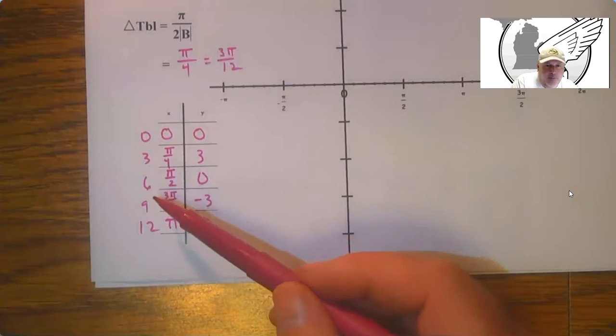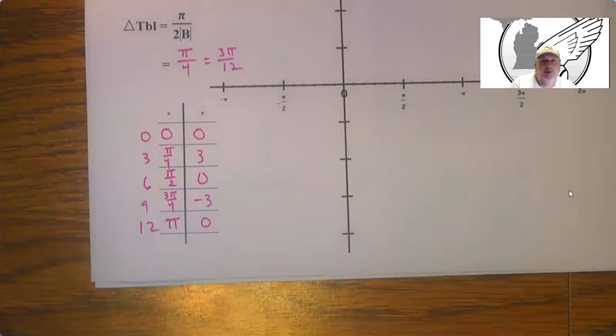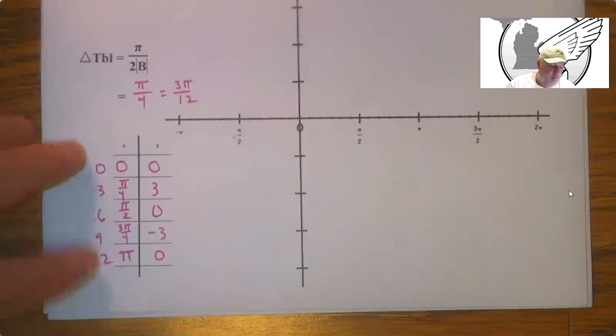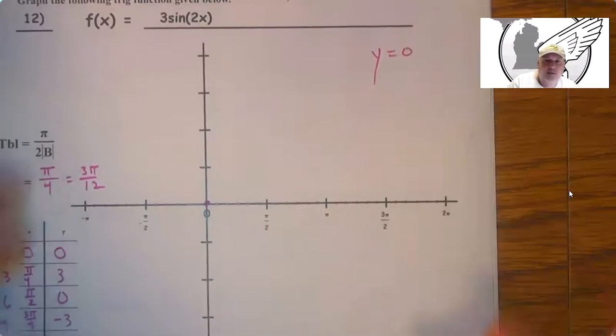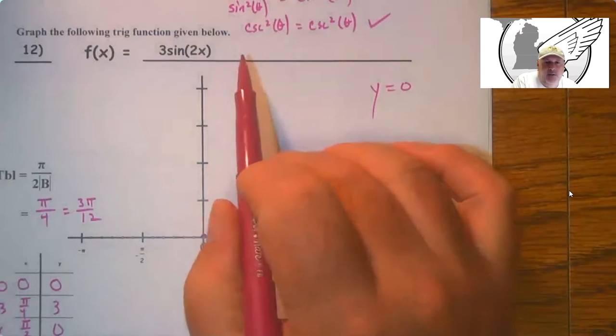So you're getting these by taking them into 12. So it's 3π over 12, 6π over 12, 9π over 12, 12π over 12, and reducing those. But you need those scale marks again so that you can do this. So y equals 0 is your midline again. It's very important. Every time you graph, you've got to know the midline.